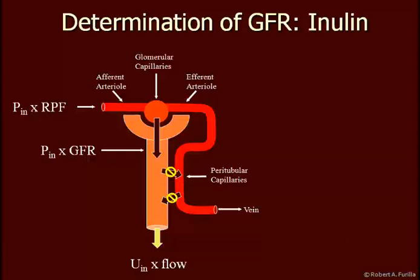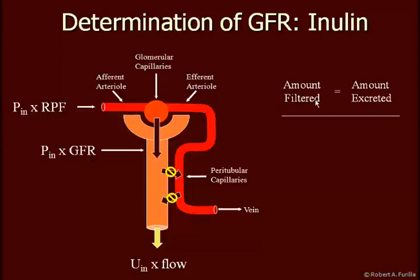The first thing we're going to look at is the clearance of something called inulin. The reason we can determine the GFR from inulin is because inulin is filtered, but it is neither reabsorbed nor secreted. The only route for inulin in the urine comes from filtration. We have to accept that the amount filtered must equal the amount excreted. The amount filtered is described by the plasma concentration of inulin times GFR, and the amount excreted is the urine concentration of inulin times urine flow.